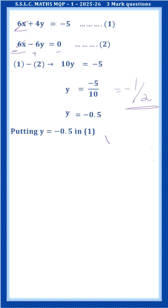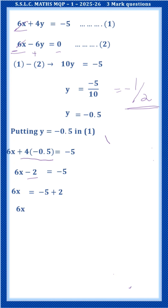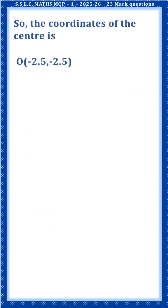Substituting y = -0.5 into equation 1: 6x + 4(-0.5) = -5, so 6x - 2 = -5, giving 6x = -3, therefore x = -1/2 = -0.5. So the coordinates of the center O are (-0.5, -0.5).